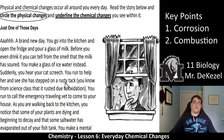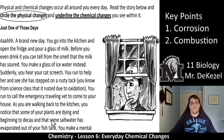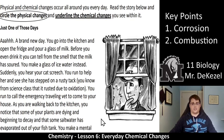The rusty tack is a chemical change due to oxidation. As you walk back to the kitchen, you notice some of your plants are dying and beginning to decay, and that some salt water has evaporated out of your fish tank. The dying and decaying — as plants die they turn into essentially dirt, changing their properties — so that is a chemical change. The salt water evaporating would be a physical change; circle that. Water evaporating is a physical change — it's still water, it just looks different.